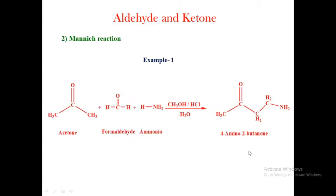The second reaction is the Mannich reaction. The Mannich reaction means: aliphatic or aromatic ketones containing an alpha-hydrogen atom react with formaldehyde and ammonia, or a primary amine, or a secondary amine, in the presence of methyl alcohol as a solvent and hydrochloric acid as a catalyst to form a beta-amino ketone. This reaction is known as the Mannich reaction.